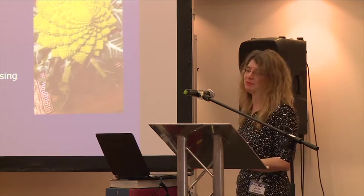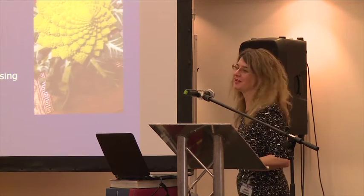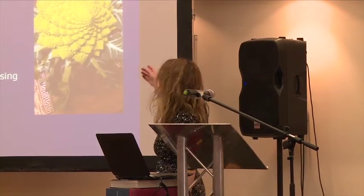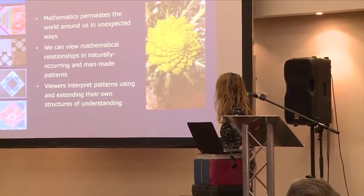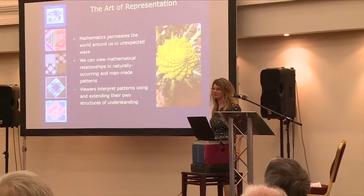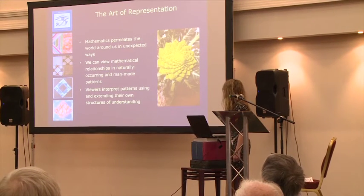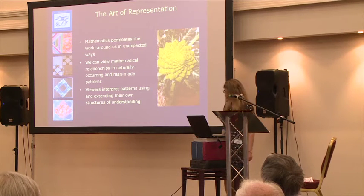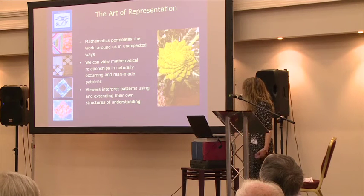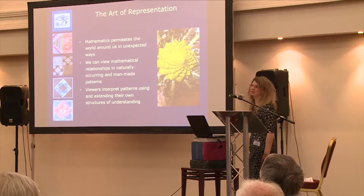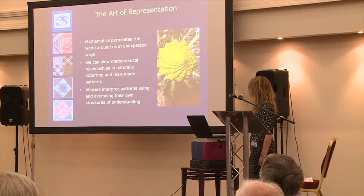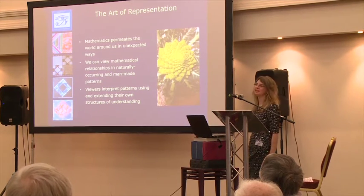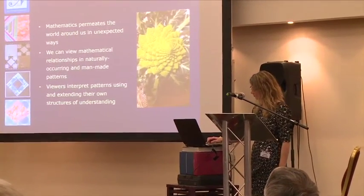There are many amazing images of patterns in the natural world. This road-based cauliflower arrived in our vegetable box and it amazed me that each little floret is like a copy of the whole thing, almost like a fractal, and how it grows is spiralling throughout the centre. There are many real-life examples following this particular Fibonacci sequence, related to the golden ratio. We view mathematical shapes in natural and man-made patterns, almost like pictures in an art gallery. I think we view and interpret patterns using and extending our own structures of understanding, and anybody can appreciate the beauty of what's in front of them.